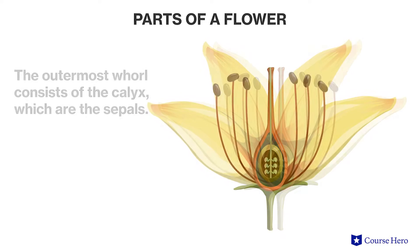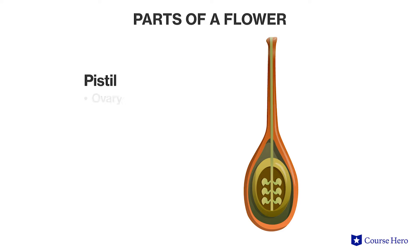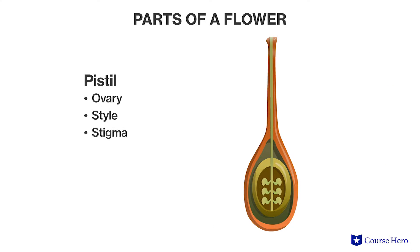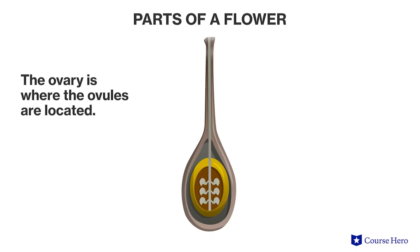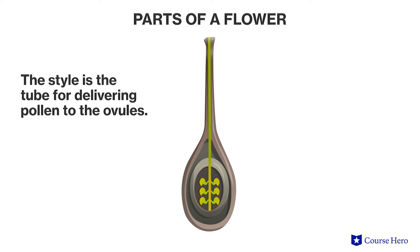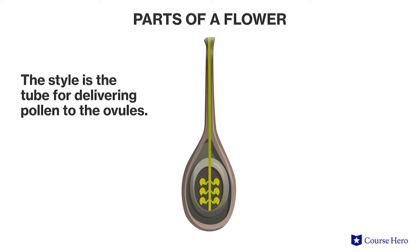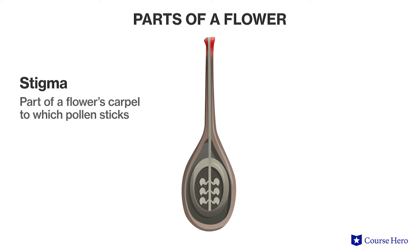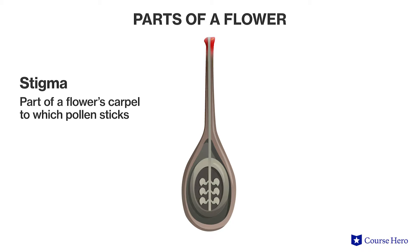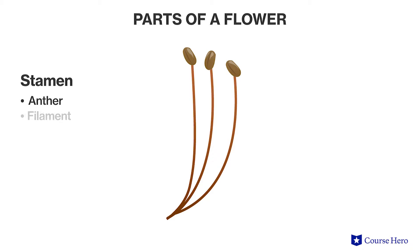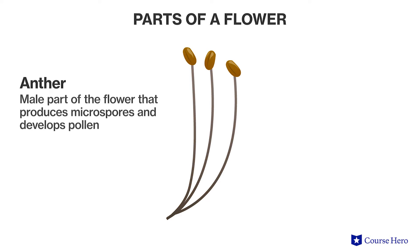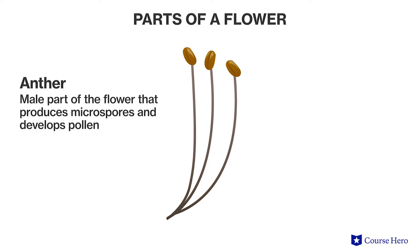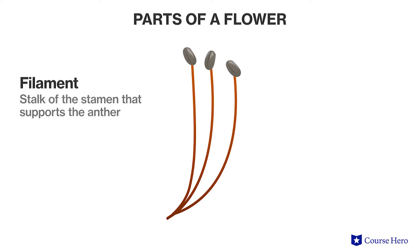The pistil, the female organ of a flower, consists of an ovary, a style, and a stigma. The ovary is where the ovules are located. The style is the tube for delivering pollen to the ovules, and the stigma is the sticky top of the carpel to which pollen sticks. The stamen, the male organ of a flower, consists of an anther and a filament. An anther is a sac at the top of each stamen where pollen develops, and the filament is the stalk of the stamen that supports the anther.